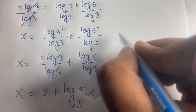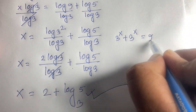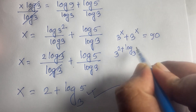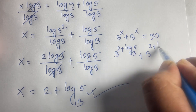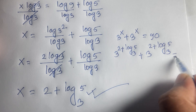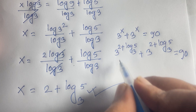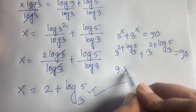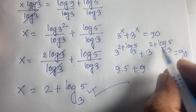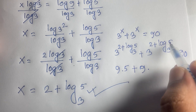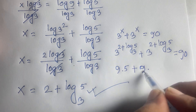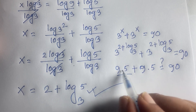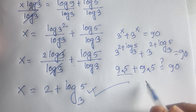Let's check our answer. The question is 3 to the power x plus 3 to the power x equals 90. With x equal to 2 plus log base 3 of 5, we get 3 to the power 2 times 3 to the power log base 3 of 5, which is 9 times 5, equals 45. So 45 plus 45 equals 90, which confirms our answer is correct.